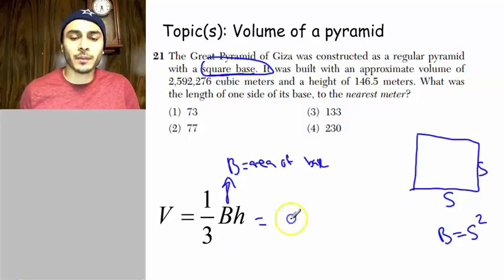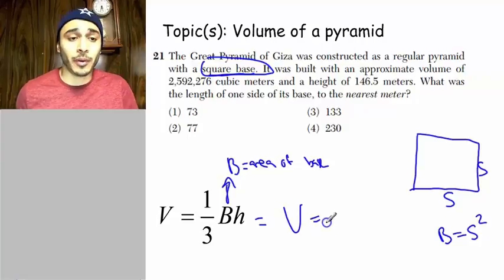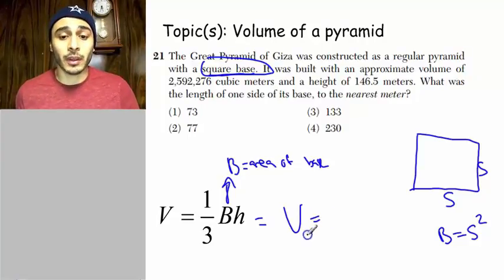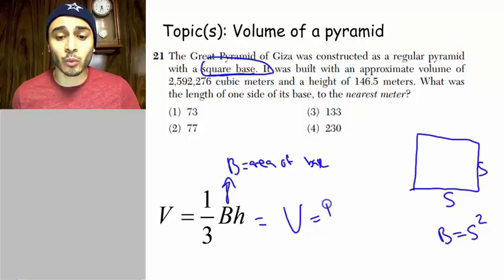So that means that our formula, if the pyramid has a square base, not all pyramids have square bases, but this one does. So if the pyramid has a square base, our formula is one-third side squared times the height.